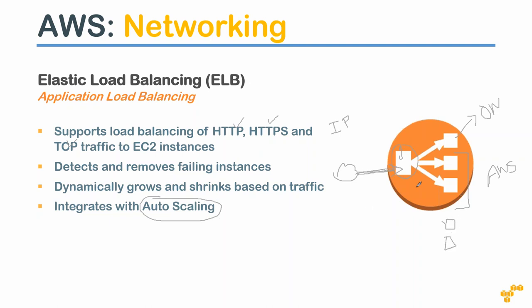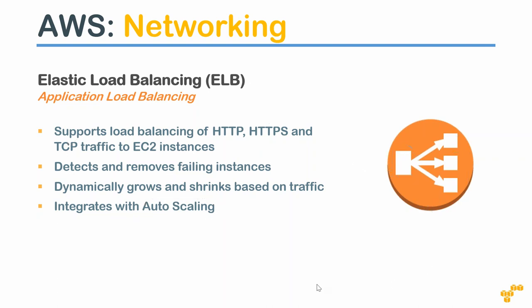The load balancer integrates nicely with Auto Scaling. When new servers are added, they are automatically registered with the load balancer to receive traffic. When auto scaling removes a node, the load balancer gets a notification and stops sending traffic to that node. Amazon manages the high availability of the load balancer itself, dynamically growing and shrinking based on traffic.